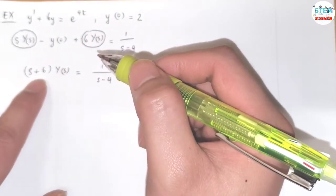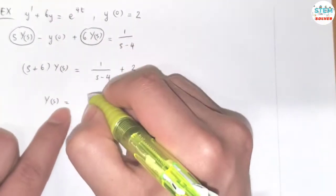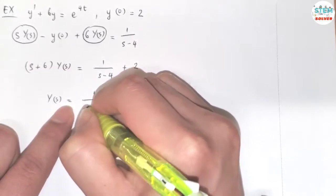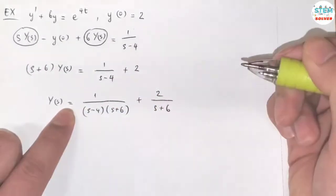Now, we need to get rid of S plus 6, so divide it on both sides. I'm left with Y of S equals 1 over S minus 4 times S plus 6, plus 2 over S plus 6.